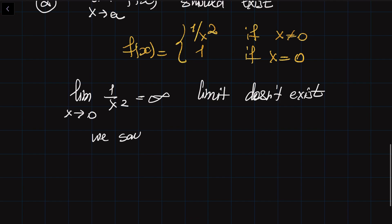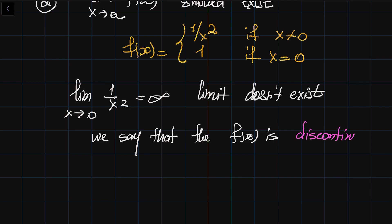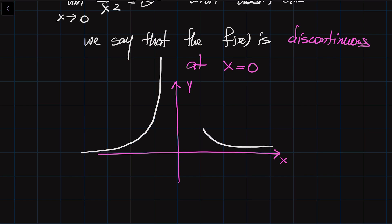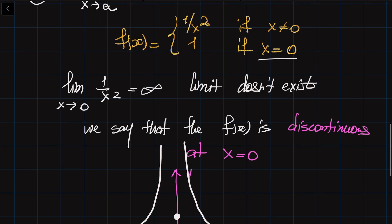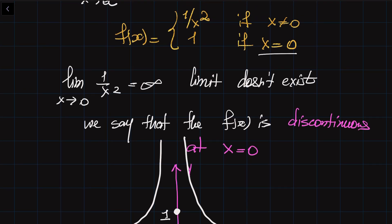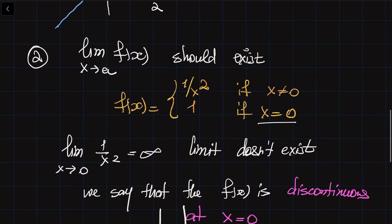We say that the function f(x) is discontinuous at x equal to 0. Graphically, as x approaches from the left or the right, the function simply goes to infinity. Even though the function has the value 1 at x equal to 0 as given, the limit as x approaches 0 doesn't exist, which is why this function is also discontinuous.